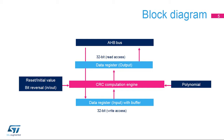It contains a single 32-bit register, which is used for both writing and reading by either the CPU or DMA controller. The initial value, input-output bit reversal, and polynomial coefficients are configured by the software during the initialization phase before starting a new CRC calculation. The CRC computation engine will hold the result of any previous CRC calculation, which then becomes the initial value for the next calculation, thus allowing a new CRC computation of a data block.